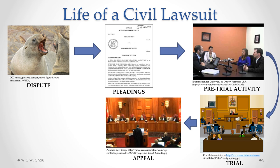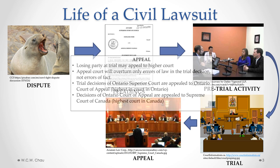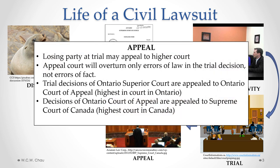After we have a decision at trial, the next stage is an appeal. This is where the losing party at trial will appeal that decision to a higher court, saying that there was an error made in the trial decision — specifically an error of how that court applied or interpreted the law. An appeal court will overturn errors of law, but will not address errors of fact. A trial decision of the Ontario Superior Court is appealed to the Ontario Court of Appeal. Decisions of the Ontario Court of Appeal are appealed to the Supreme Court of Canada, which is the highest court in Canada.